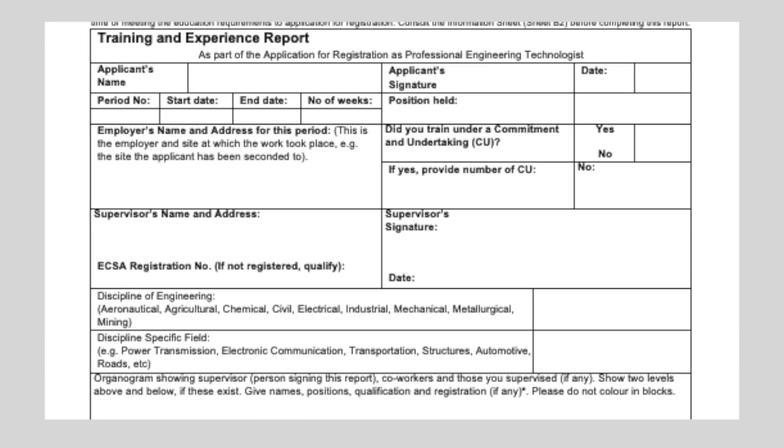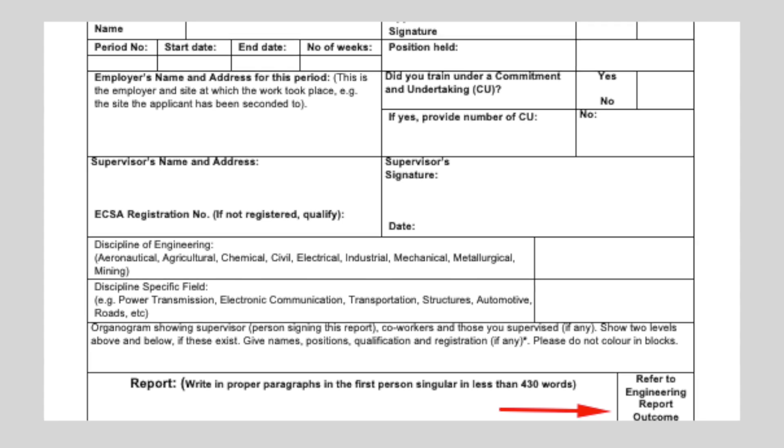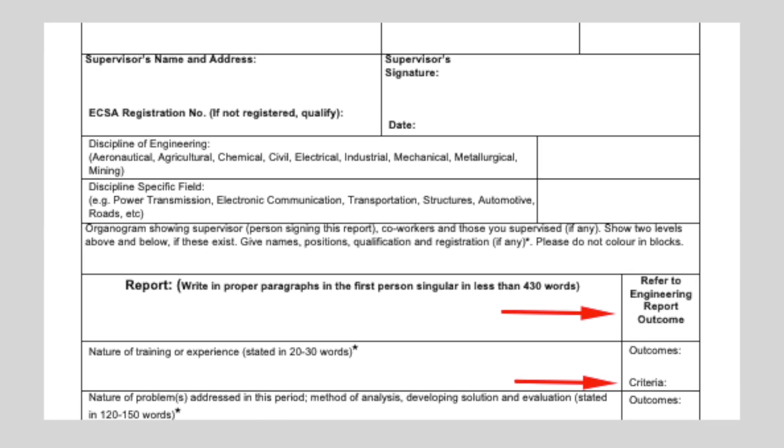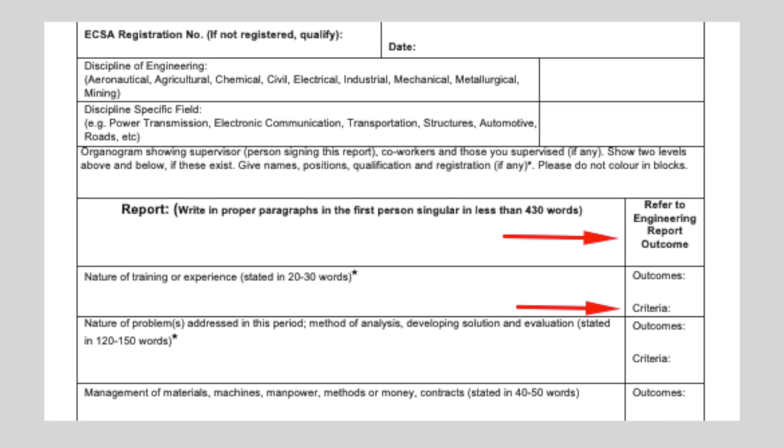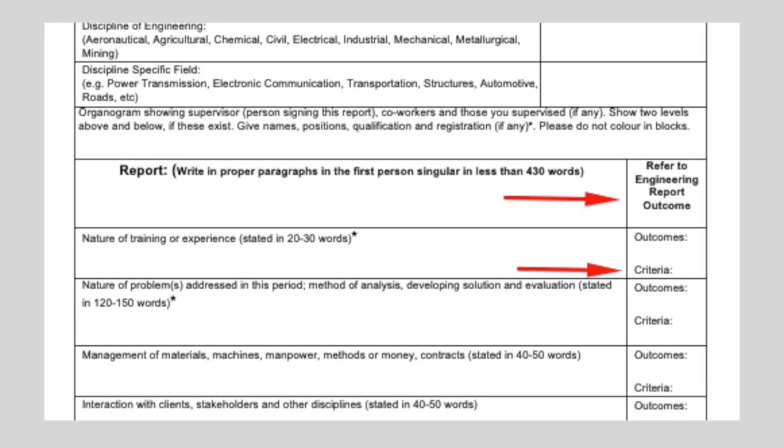There are 11 outcomes, as you know by now, and each one of these outcomes will have one, two, or three different criteria. You will find the box where to put the specific criteria in form B2.1 TERs, which is your training and experience report. If you look on the right-hand column, you'll find 'refer to the engineering report outcomes,' and underneath that you will have an outcome and a criteria. So your outcome, for example, would be outcome number one, but your criteria might be either A, B, or C, or 1, 2, or 3. That is what you need to document there.